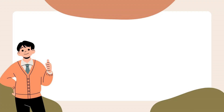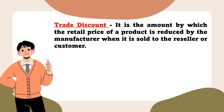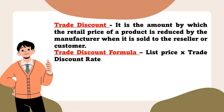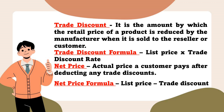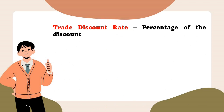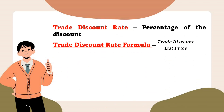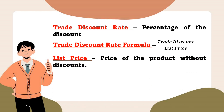Here is what you learned today. Trade discount is the amount by which the retail price of a product is reduced by the manufacturer when it is sold to the reseller or customer. Trade discount formula: List price × Trade discount rate. Net price is the actual price a customer pays after deducting any trade discounts; formula: List price − Trade discount. Trade discount rate formula: Trade discount ÷ List price. List price is the price of the product without discounts.